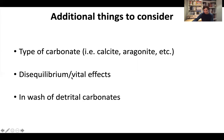Secondly, what we call disequilibrium or vital effects: in both organic carbonate — such as ostracod shells formed by organisms — and inorganic carbonate precipitating in the lake waters, carbonate can precipitate out of equilibrium. This gives delta-18O values different from what you would expect for the given delta-18O of the lake water and temperature from which they formed.